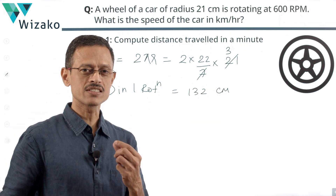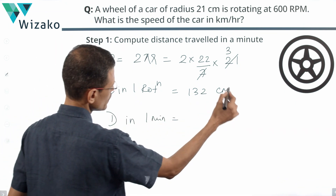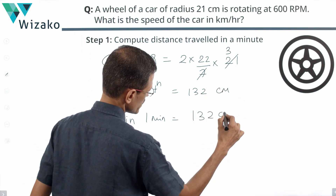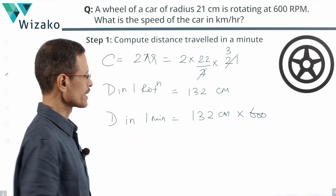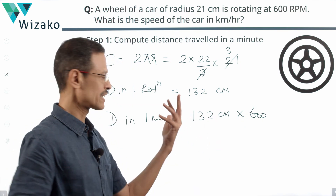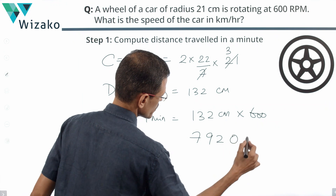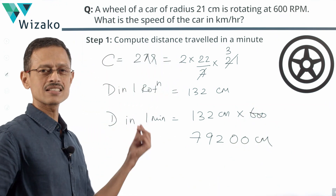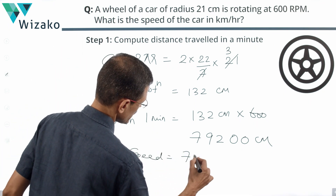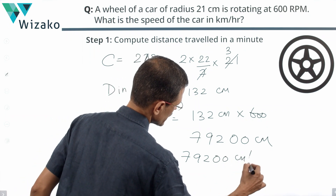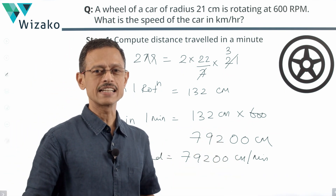Next step: compute the distance covered in one minute. Distance in one minute equals the distance covered in one rotation — 132 centimeters — times the number of revolutions per minute. That is 132 × 600. Doing the multiplication: 600 + 192 = 79,200 centimeters. This is the distance covered in one minute. Therefore, the speed of the car is 79,200 centimeters per minute.